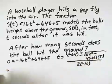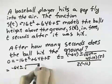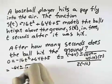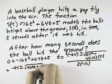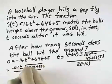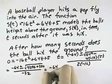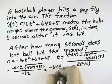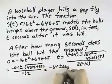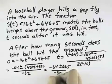So that equals negative 64 plus or minus the square root of 4096 plus 320, all over negative 32, or negative 64 plus or minus 66.5, all over negative 32.